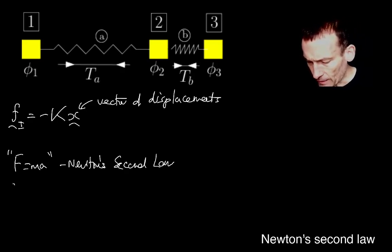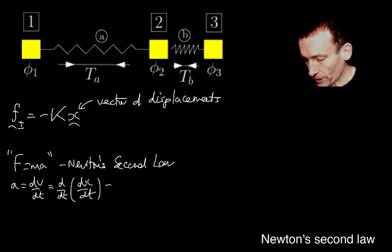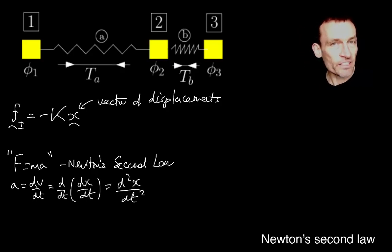Now, the acceleration here is defined to be the rate of change of the velocity, which of course is the rate of change of the rate of change of position. So in other words, if a mass is located at position x, then the acceleration of the mass will be the second time derivative of that location with respect to time.